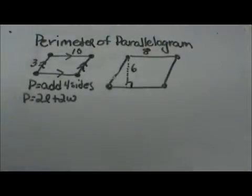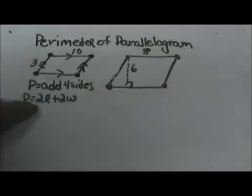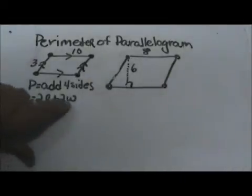To find the perimeter of a parallelogram you can have two methods. You can use the formula perimeter equals adding up the four sides, or you can use a more formal formula where perimeter equals two lengths plus two widths.